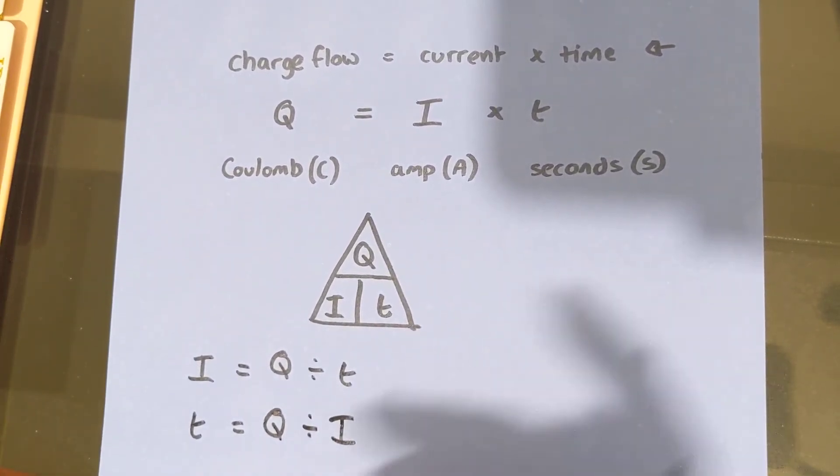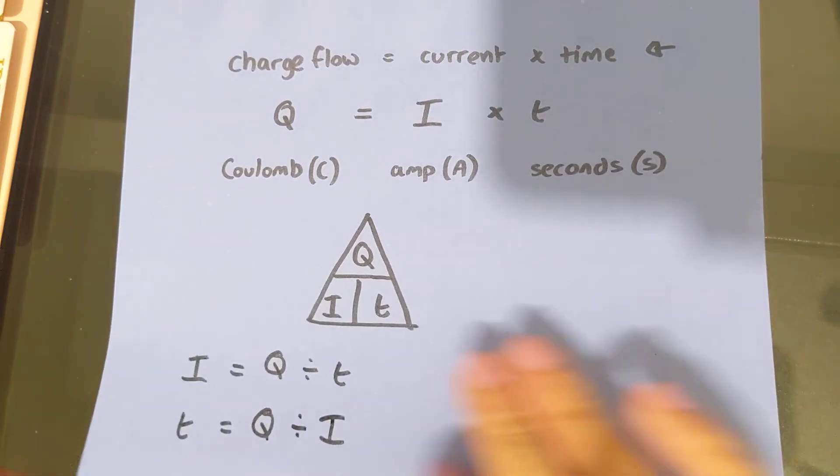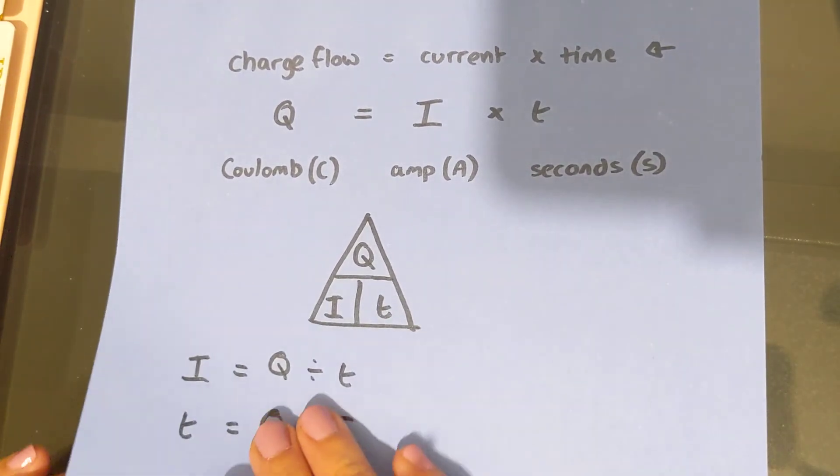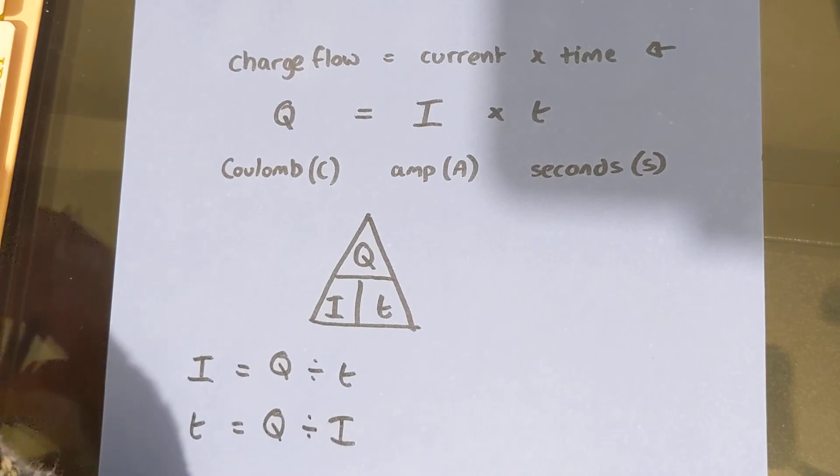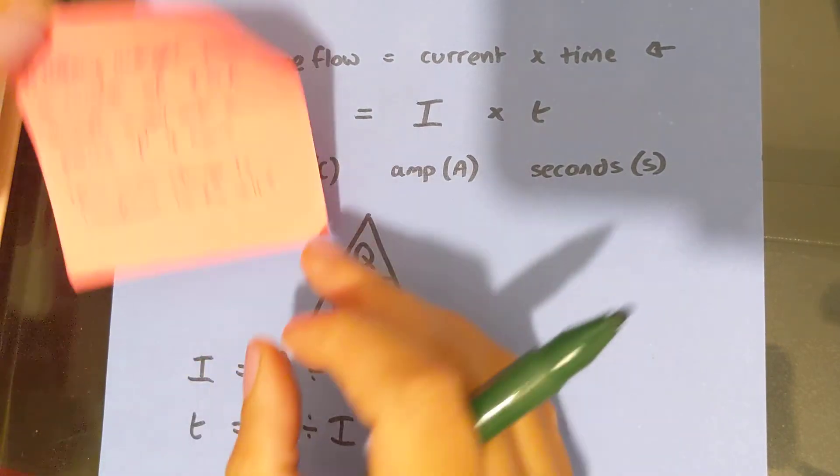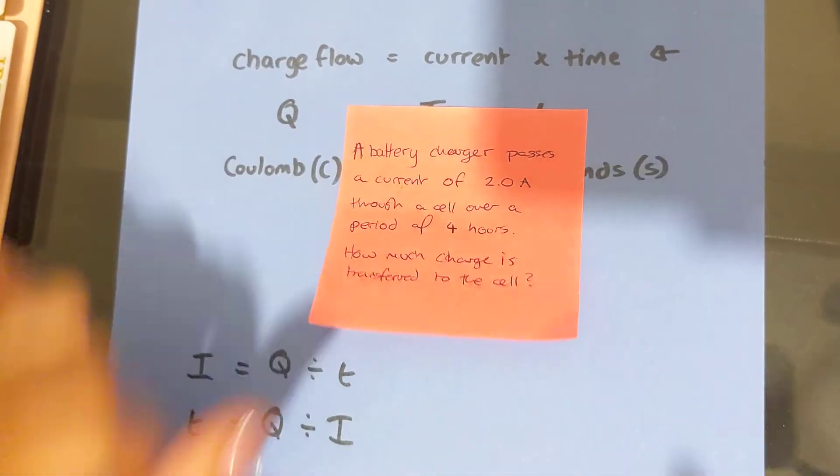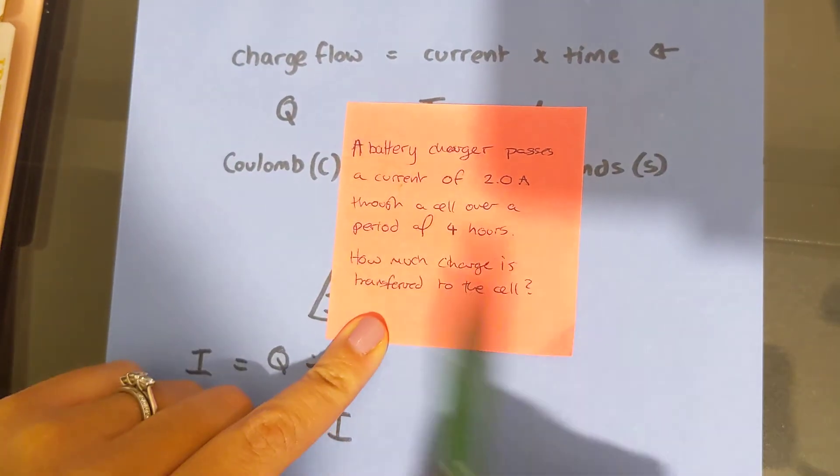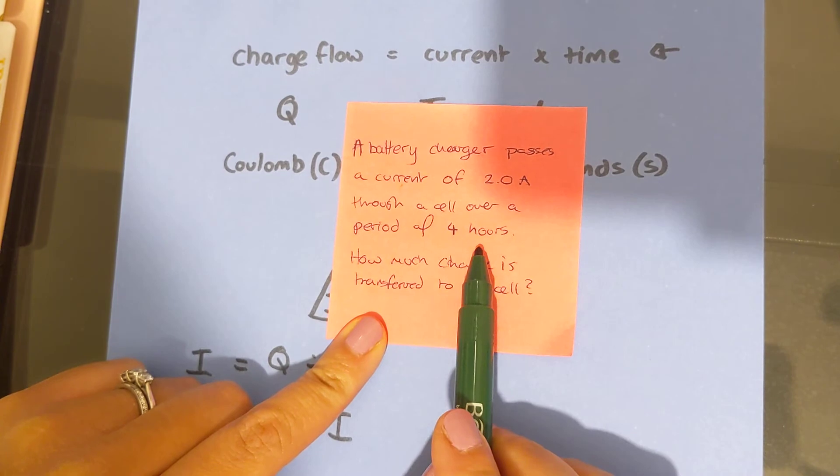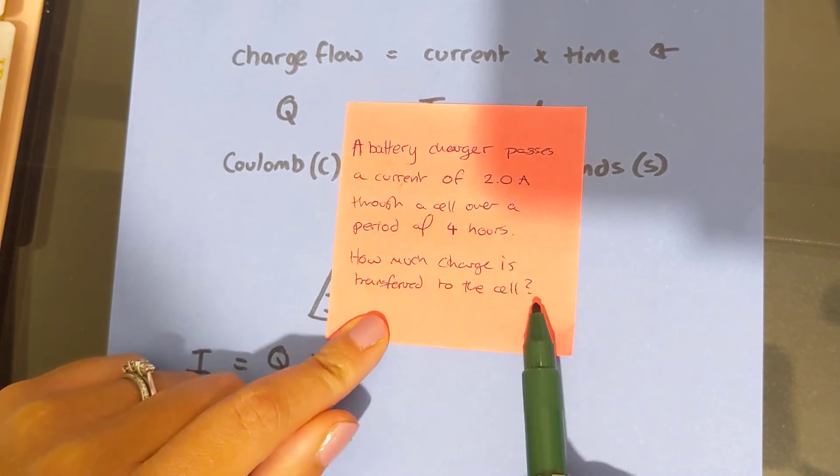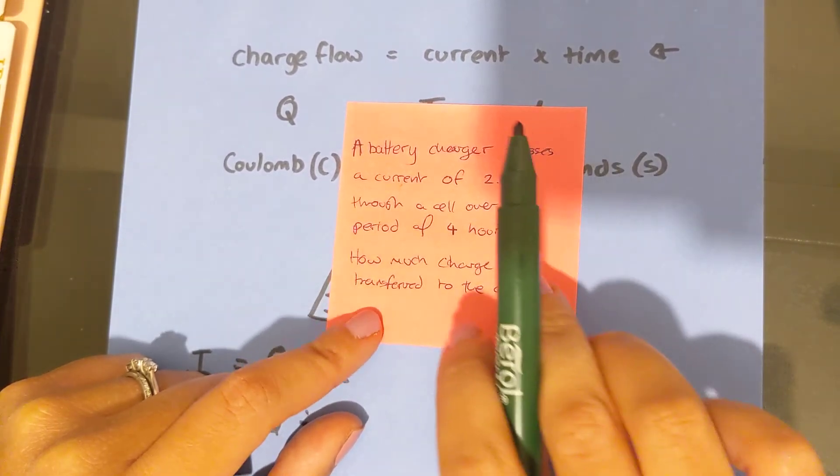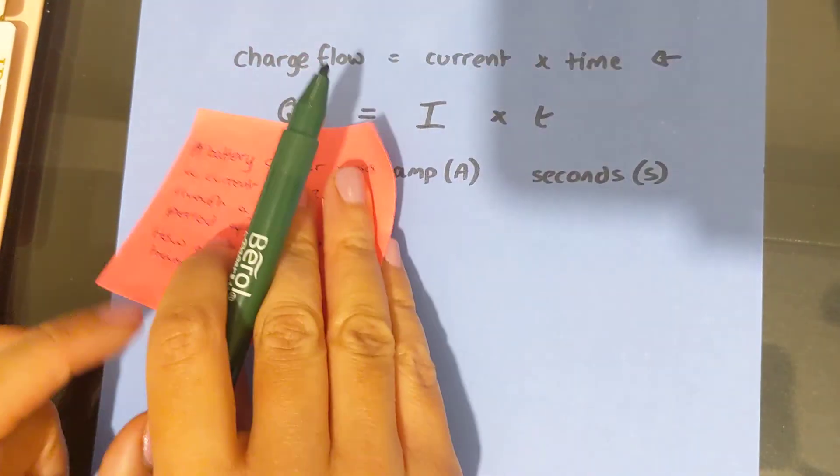Let's take a look at an exam question or a practice question then. So I've just got this one here. It says a battery charger passes a current of two amps through a cell over a period of four hours. How much charge is transferred to the cell? So I'm just going to move that across here now.